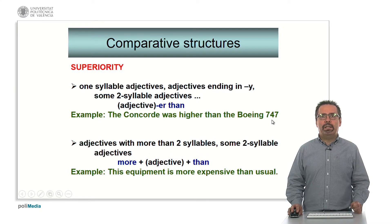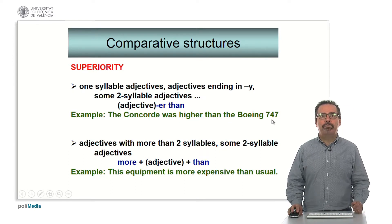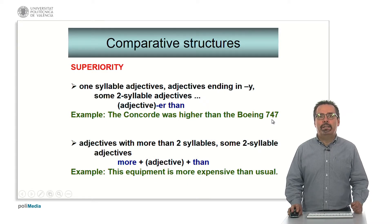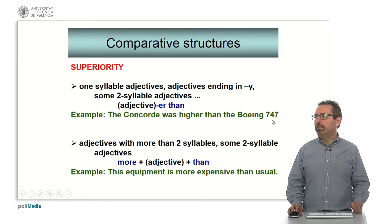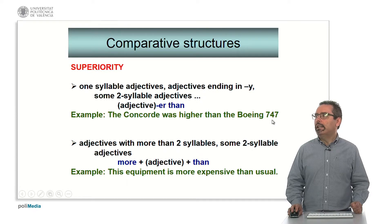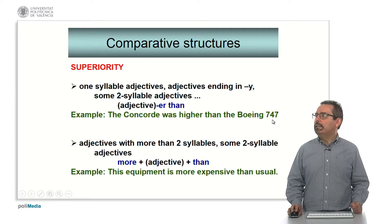The most difficult comparative structures are those of superiority. Here we make a typical difference taking into account the rule between short adjectives and longer adjectives. For short adjectives we use the suffix '-er than'. For example, 'The Concorde was higher than the Boeing 747.' For longer adjectives we use 'more...than'. For example, 'This equipment is more expensive than usual.'